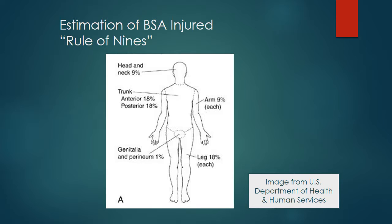The head is one area of 9%. Each entire arm, front and back, is an area of 9%. The torso goes from the neck to the pelvis and is divided into two areas of 9%: the chest area and the abdominal area, making the entire front torso 18%. The back is similarly divided into upper and lower torso, each equivalent to 9% body surface area. Each leg is divided into the anterior portion — 9% — and the posterior from the hip to the toes — 9%. A burn encompassing the entire leg is therefore 18%.